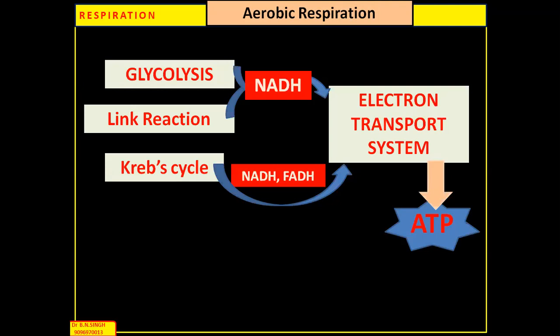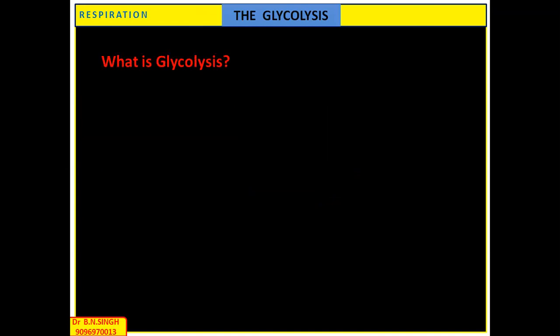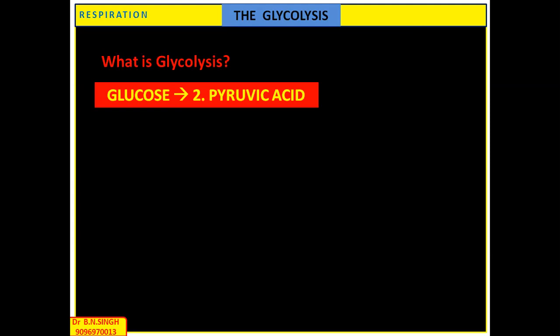Today we will discuss about glycolysis. What is glycolysis? Glyco means glucose. Glycolysis is the partial breakdown of glucose into two molecules of pyruvic acid by a sequence of ten enzymatic reactions. This process is called glycolysis.